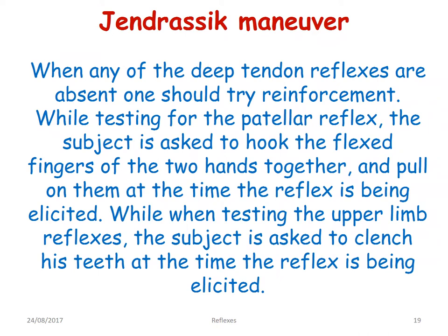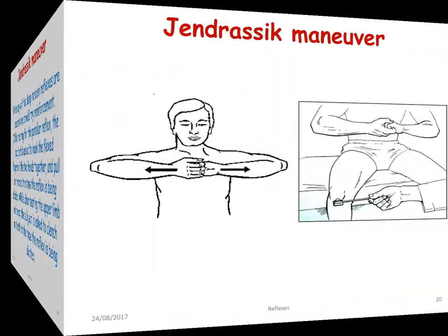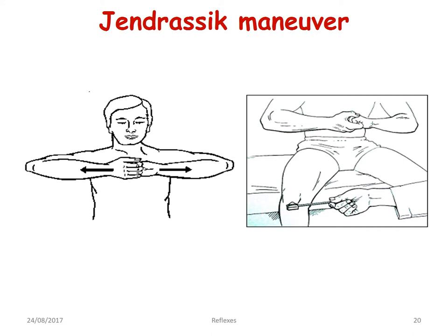You may have a situation when any of these deep tendon reflexes are absent. One should try reinforcement. While testing for the patellar reflex, the subject is asked to hook the flexed fingers of the two hands together and pull on them at the time the reflex is being elicited. When testing the upper limb reflexes, the subject is asked to clench his teeth at the time the reflex is being elicited. In this way, we activate the gamma motor neurons and thereby the muscle spindles become more sensitive.